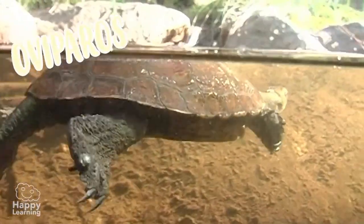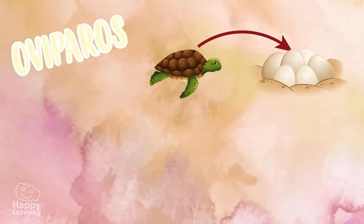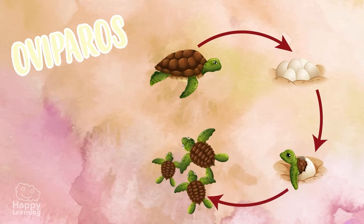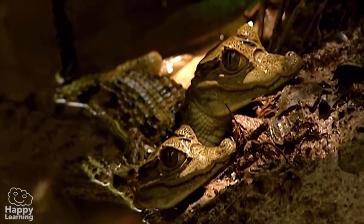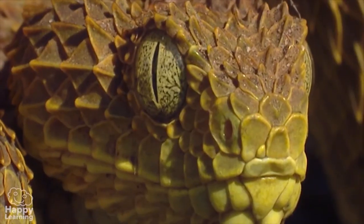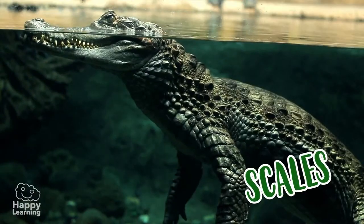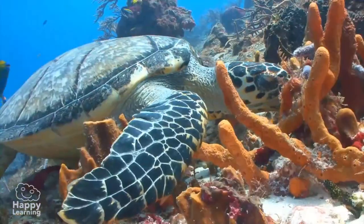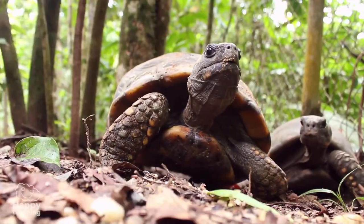Reptiles are oviparous — they reproduce by eggs. When the eggs develop and hatch, the babies are just like their parents, but very small. As you can see, reptiles' skin is covered with strong, tough scales, and some — like tortoises — even have a shell. It looks like they have their house on their back!